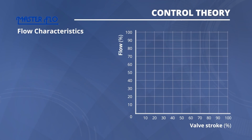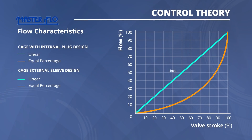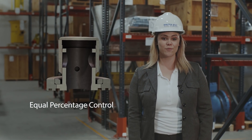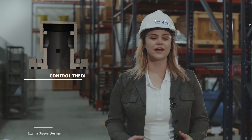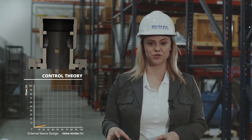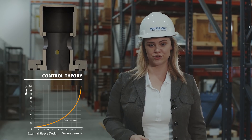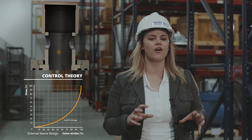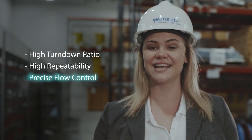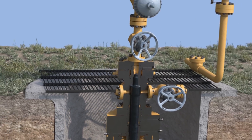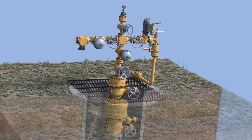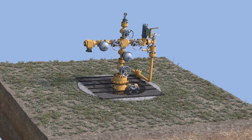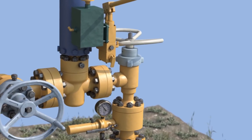The cage with internal plug and external sleeve choke valve designs are both characterized by equal percentage or modified parabolic control. They provide a gradual response in the lower portion of stem travel, delivering a high level of initial control. This brings the well on stream. As the valve is open and the flow increases, this level of control is maintained throughout the stem travel, resulting in high turndown ratio, high repeatability, and precise flow control.